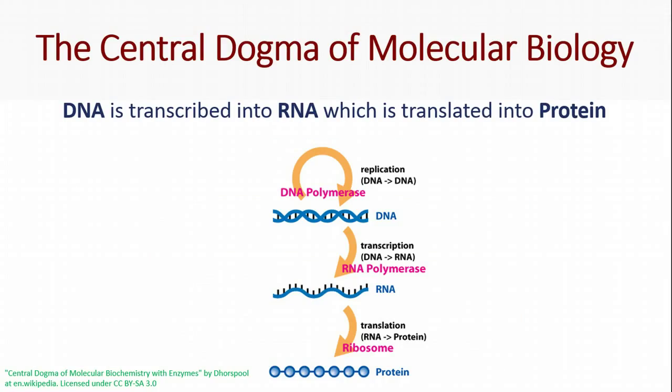So what is the central dogma of molecular biology? That is the idea that DNA is transcribed into RNA, which is translated into proteins. And this process only goes one direction. The sequence of DNA is a code, and that code is transcribed into a molecule called RNA, which is then translated into proteins. The structure and function of proteins is all encoded inside our DNA.